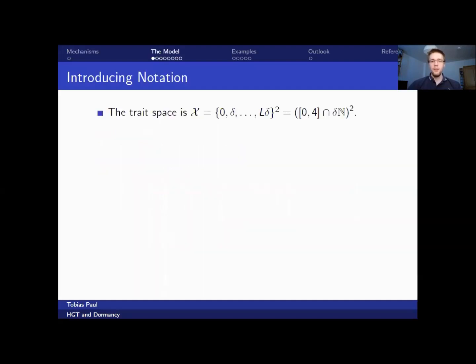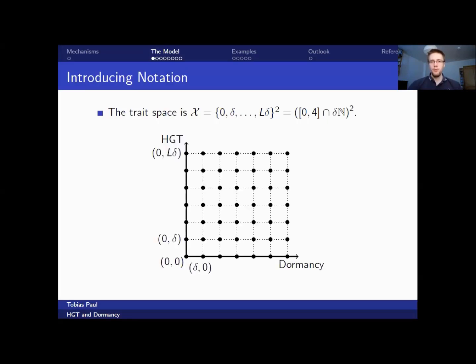The model is an individual-based one with a trait space, which in our case will be the two-dimensional delta grid on the interval 0,4, which is a useful choice because then we have one component governing the strength of dormancy and another component governing the strength of horizontal gene transfer. The choice of the interval 0,4 is arbitrary. Of course, you could choose any other interval you like and adopt the rates that we will discuss shortly accordingly.